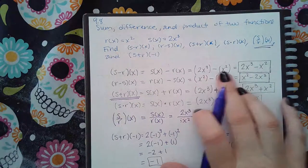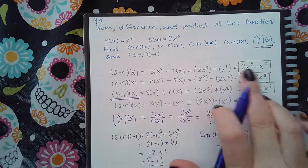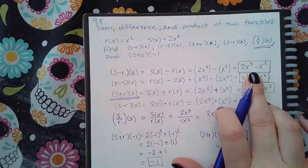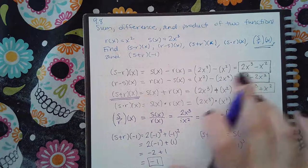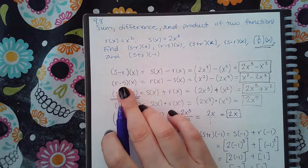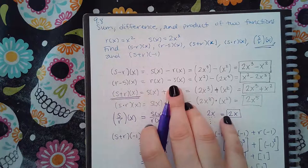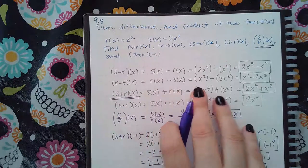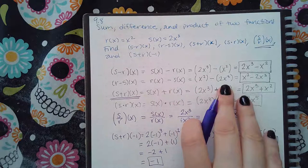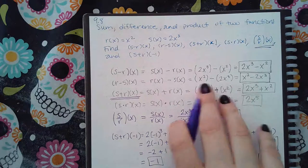Then you try to combine like terms or simplify this expression as much as possible, but there's nothing really to do because they are not like terms. If I want to do (r - s)(x), that means r(x) minus s(x). So r(x) is x squared, s(x) is 2x cubed.